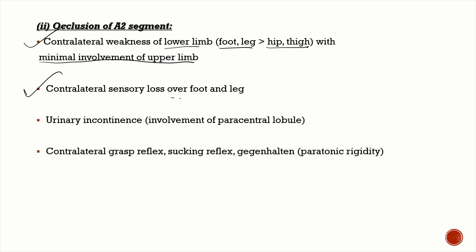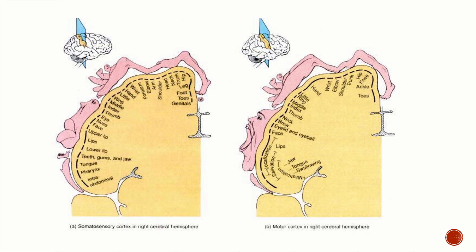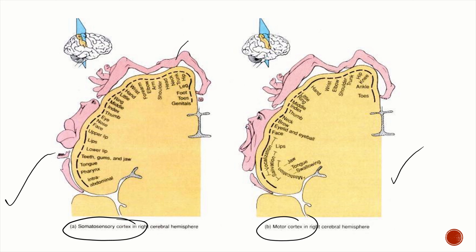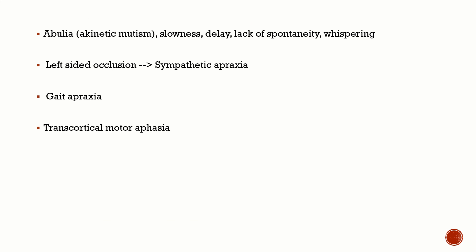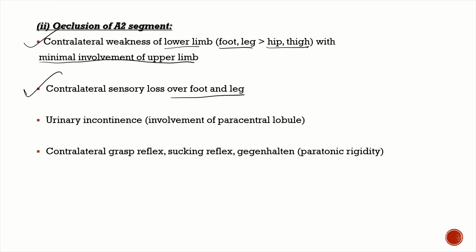Similarly, sensory loss is also going to be contralateral, predominantly affecting the lower limbs. The reason: looking at the somatosensory and motor cortex homunculus, the medial part represents the lower limbs, and this medial portion is supplied by the anterior cerebral artery. That is why you get motor and sensory loss predominantly affecting the lower limbs — specifically the distal part, so the foot and leg are involved more than the hip and thigh.